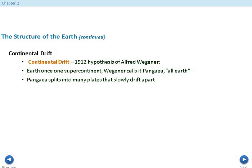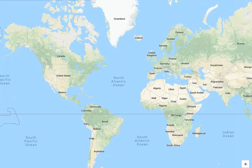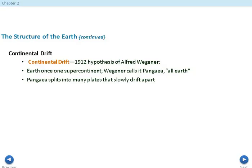Continental drift is a 1912 hypothesis by Alfred Wagner. The earth was once a supercontinent. Wagner calls it Pangaea or all earth. Pangaea split as the plates move slowly past each other. The idea is really simple. We can see Africa has an inland part, and South America has an outward part. If you took South America and put it into Africa, they would fit together. This portion of North America goes in and these portions go out. The idea is that these massive chunks of continents were all formed together. The interesting part is we are actually seeing these continents move.